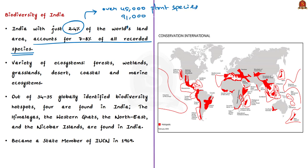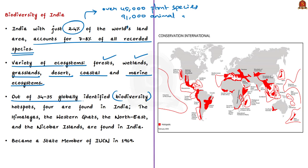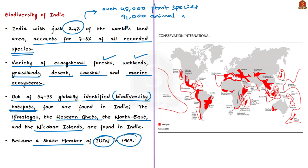India's diverse physical features and climatic conditions have resulted in a variety of ecosystems — forests, wetlands, grasslands, deserts, and coastal and marine ecosystems — which harbor and sustain high biodiversity and contribute to human well-being. Out of 34 to 35 globally identified biodiversity hotspots, four are found in our country: the Himalayas, the Western Ghats, the Northeast, and the Nicobar Islands. With reference to IUCN, note that India became a state member in the year 1969 through the Union Ministry of Environment, Forest and Climate Change.